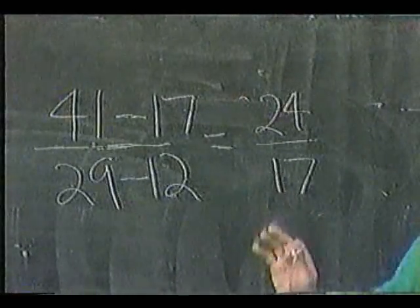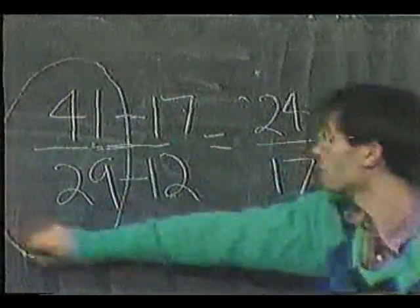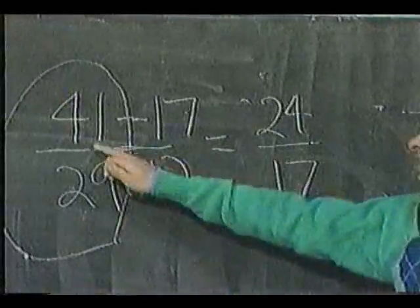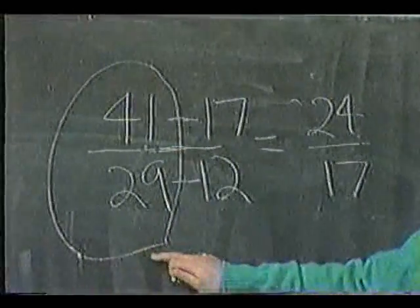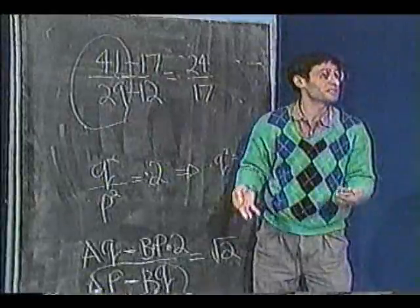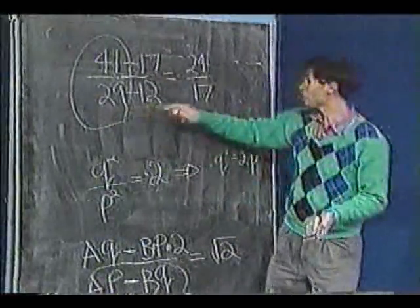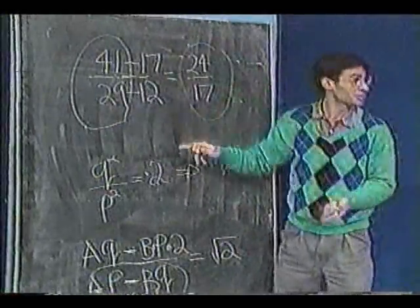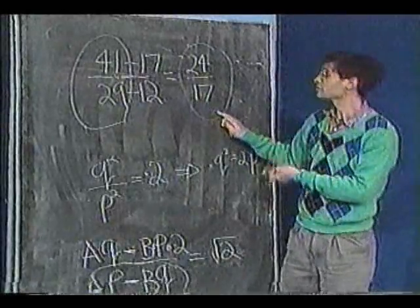So I started, like I've got a contradiction already, because I started with a fraction which I said was the square root of 2, presumably in lowest terms, because you can always write a fraction in its lowest terms, and I've already got it down to where it equals a fraction which is in smaller terms than I started out with.